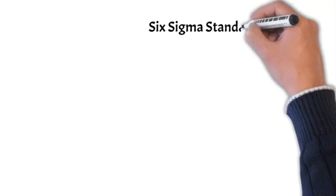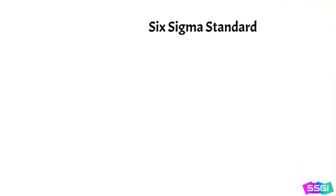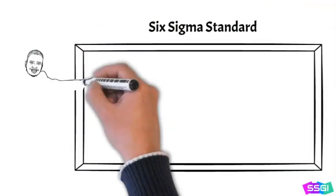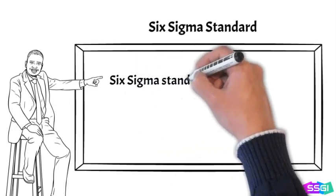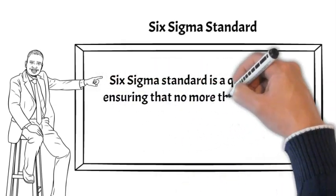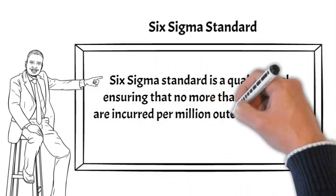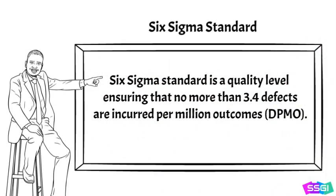The goal of every process improvement specialist is to achieve as high a quality outcome as possible. Often, we hear of a Six Sigma standard. Briefly, it is a quality level ensuring that no more than 3.4 defects are incurred per million outcomes, where defects per million outcomes is often abbreviated as DPMO.